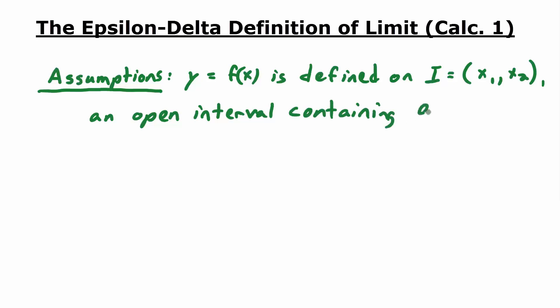Assumptions. Let's assume y equals f of x is defined on an interval I, an open interval I, say it has endpoints x1 and x2, for instance. I'll say I is an open interval containing A. So y equals f of x is defined on I, an open interval containing A. Now, y equals f of x may not be defined at A itself. So we'll say, except possibly at x equals A.